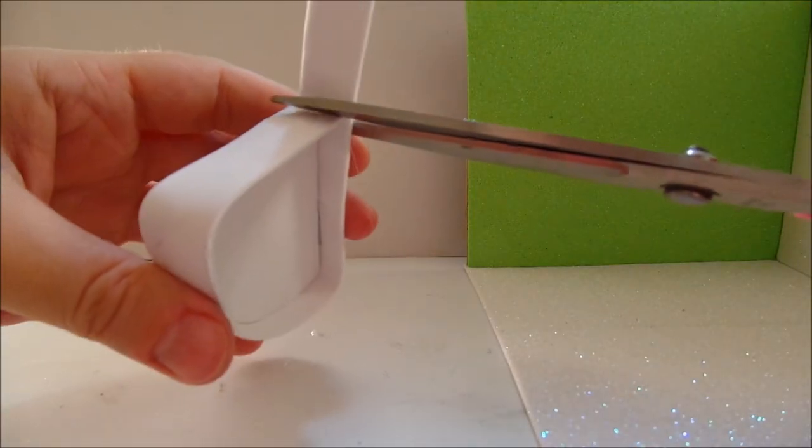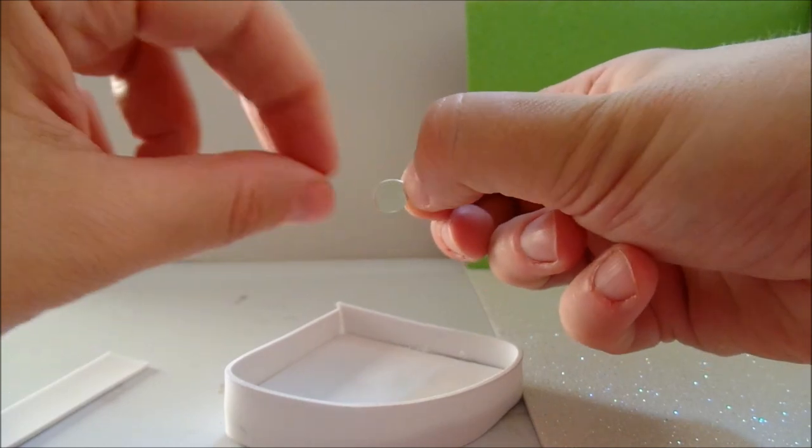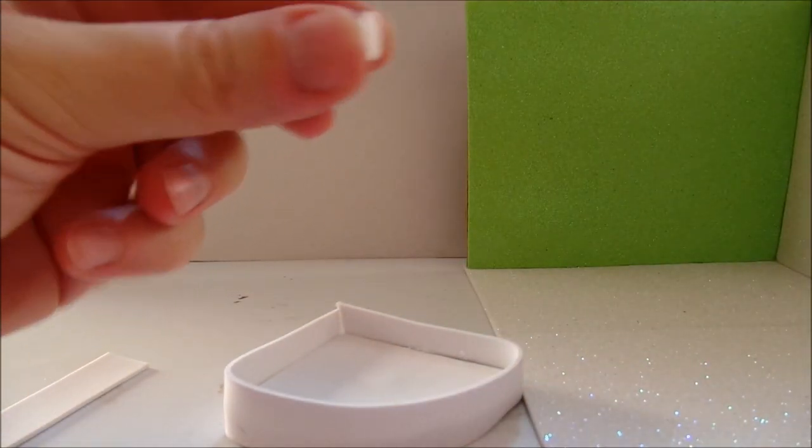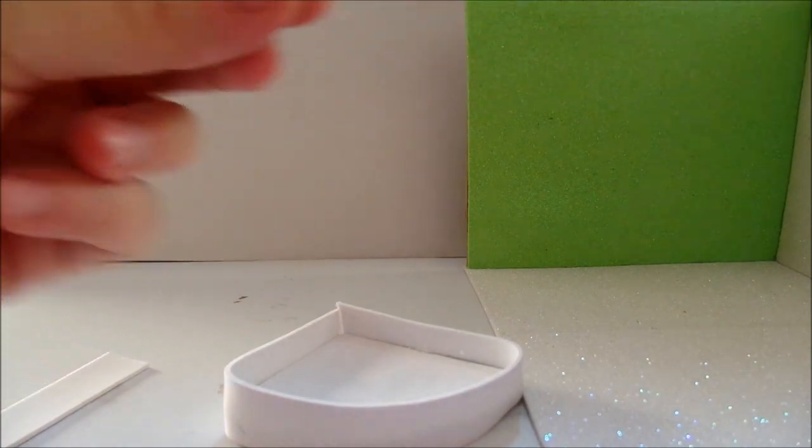Trim off the excess. Glue a circle of silver paper inside for the water drain.